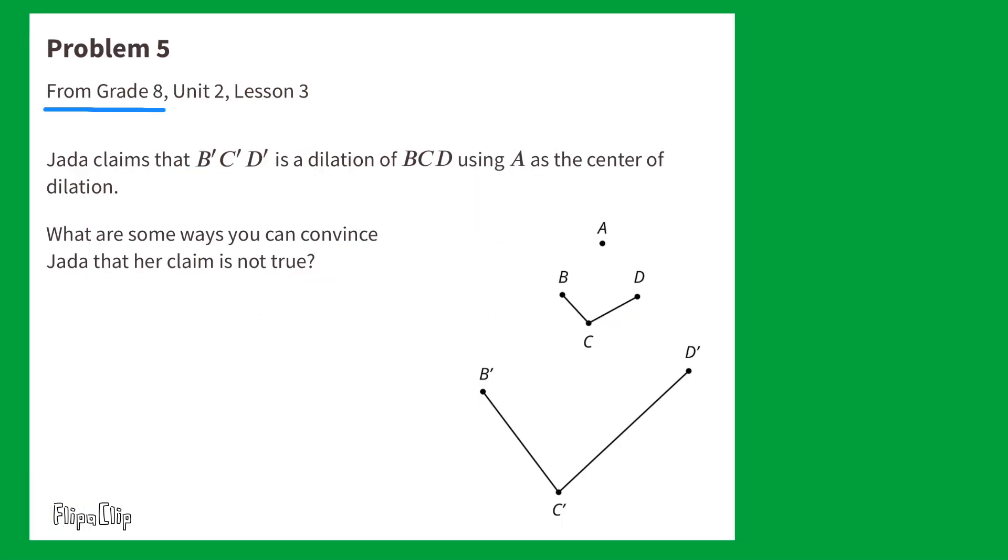Problem number five from eighth grade unit two, lesson three. Jada claims that B prime, C prime, D prime is a dilation of BCD using A as the center of dilation. What are some ways you can convince Jada that her claim is not true?